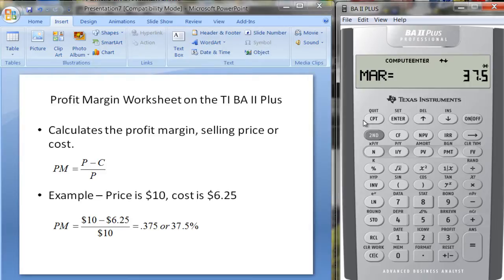Now let's clear this worksheet. If you want to clear the worksheet, you need to be in the worksheet. You hit second, clear work. Suppose we know the cost is $12 per unit and suppose we would like to have a 30% margin. So we can put in 30% here and we can calculate what price we need to sell the good for. We'll need to sell the good for $17.14 approximately in order to earn a 30% return or have a 30% margin.